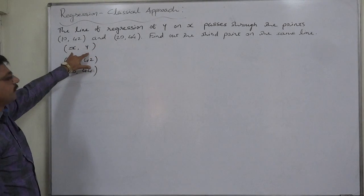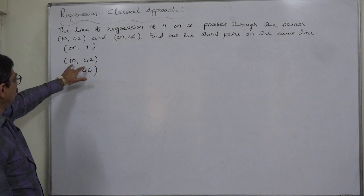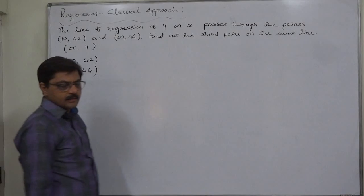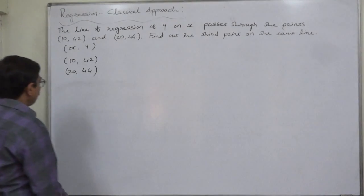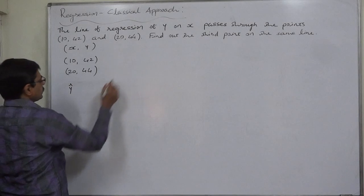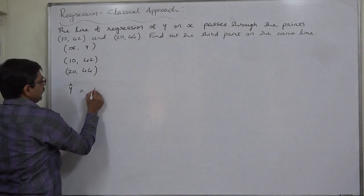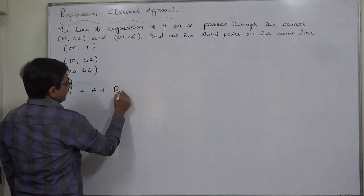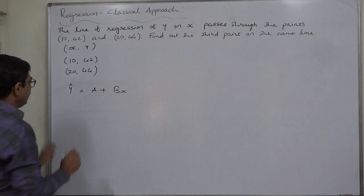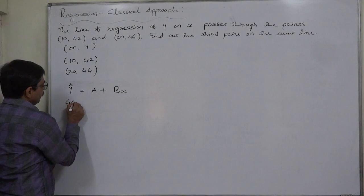Let us find out the equation. We know that the coordinates are always written in the form x and y, so 10 is x, 42 is y, 20 is x, 44 is y. Let's first write the standard form of the line of regression of y on x: y = a + bx, or bx + a. Let's substitute the available values of y and x respectively into this equation.